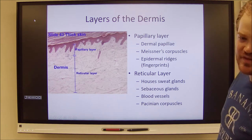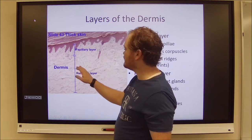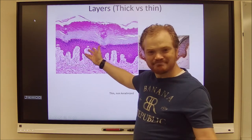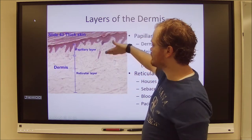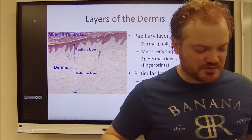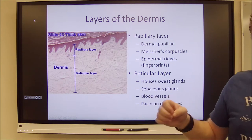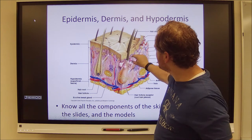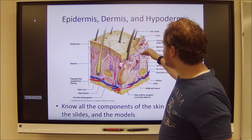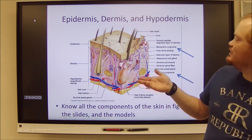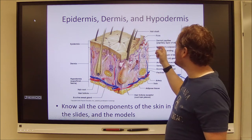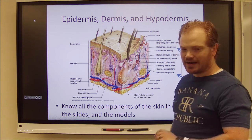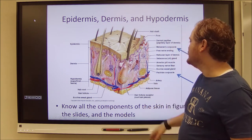There are layers in the dermis worthy of consideration: the papillary layer and the reticular layer. The papillary layer houses the dermal papillae, and the reticular layer is everything else. The dermal papillae with their Meissner's corpuscles are in the papillary layer, and the reticular layer houses everything else including the Pacinian corpuscles.